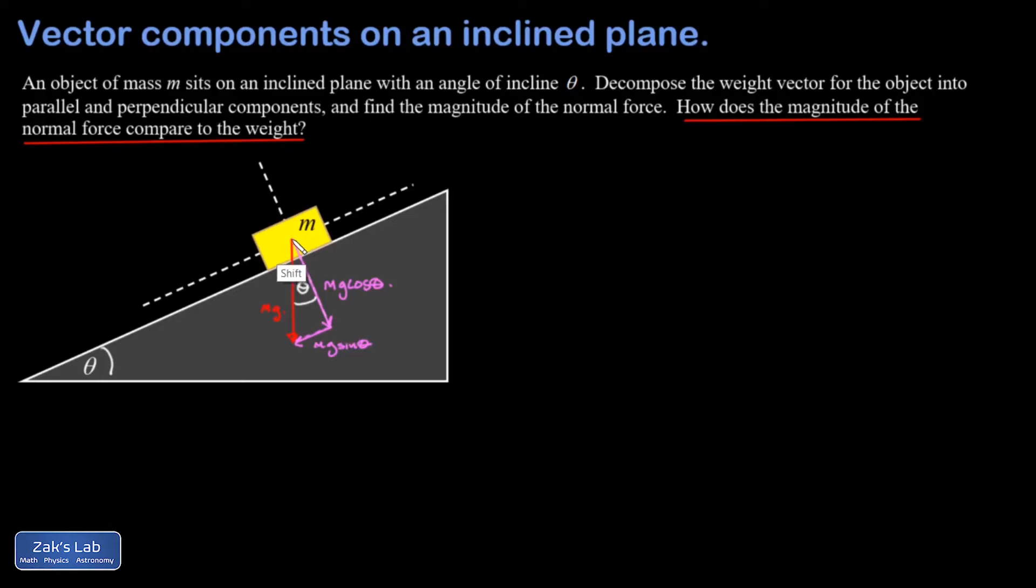Normally we go straight to drawing that opposite side attached to the mass itself. It's more useful to show it there. That's the component of the force of gravity pointing down the ramp parallel to the surface.